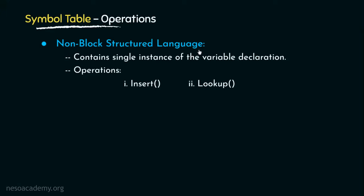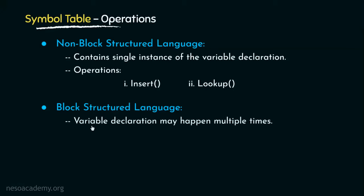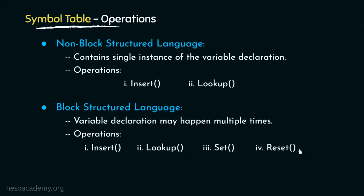Non-block structured languages were discontinued particularly because of the use of unstructured control flow using goto statements. Later on, block structured languages like C were introduced, where blocks are specified by curly braces. In block structured languages, variable declarations may happen multiple times within different blocks. The operations available are insert and lookup, and additionally set and reset operations, which are used for defining and redefining the scopes of variables declared multiple times.